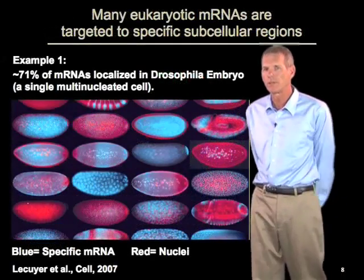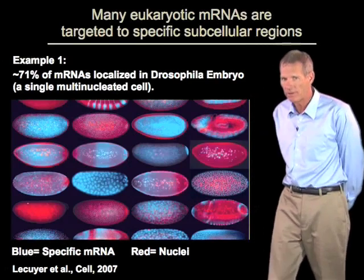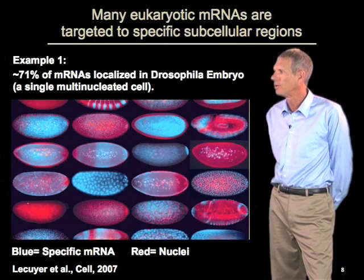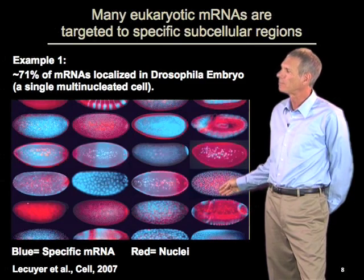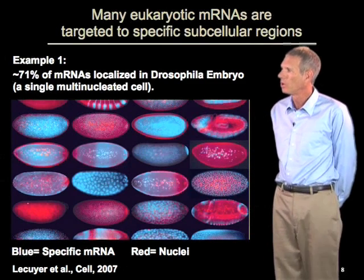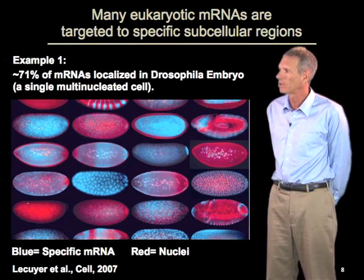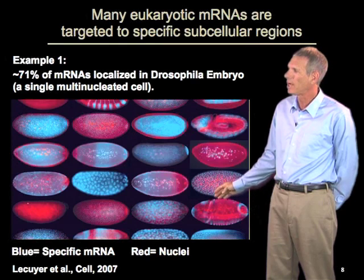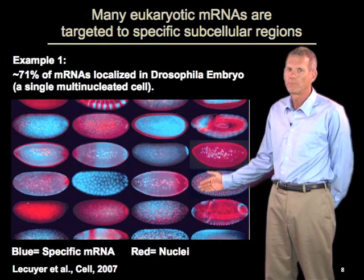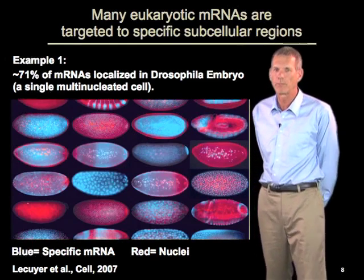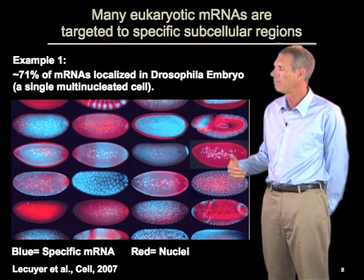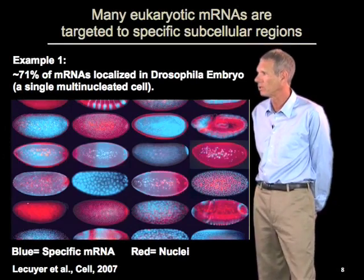One of the interesting events of the last five years has been that we've learned that many mRNAs are localized in eukaryotic cells. This slide illustrates an experiment done in Drosophila embryos, where about 3,000 mRNAs were examined for their localization within the embryo. What you can see here is that there's a large number of diverse patterns — these mRNAs are not just distributed uniformly. In fact, of those 3,000 mRNAs, about 71% were actually localized, suggesting that a vast number of mRNAs are targeted to specific regions.